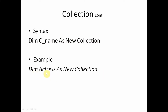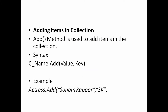Here is an example: Dim actress As New Collection. Now we have declared the collection named actress. To add items within the collection, we use the Add method. The syntax is cName.Add with two parameters: first is the value, and second is the key. The key is the parameter which will be used to access the value from the collection. For example: actress.Add("Sonam Kapoor", "SK") — the value is a string, and the key SK is also specified within double quotation.